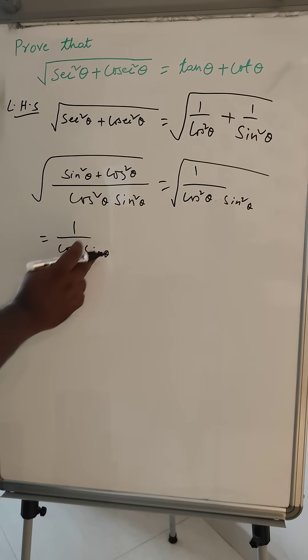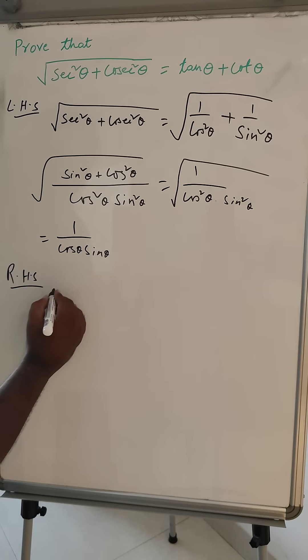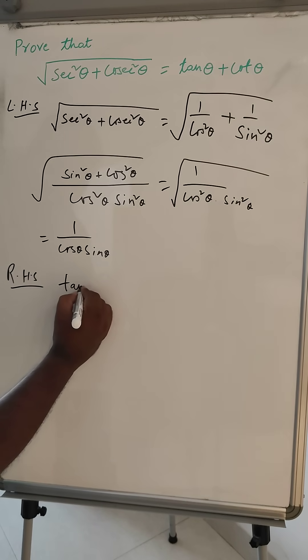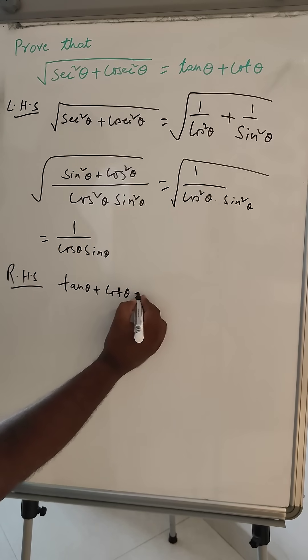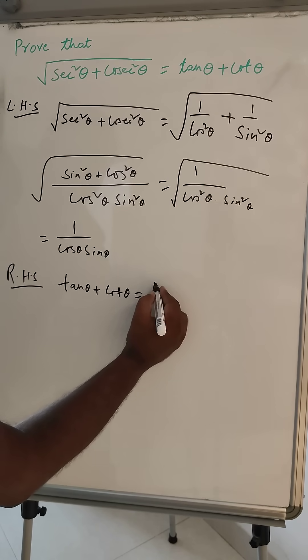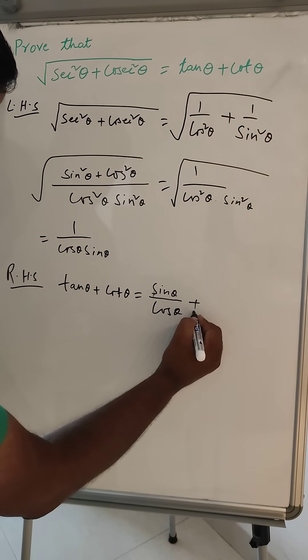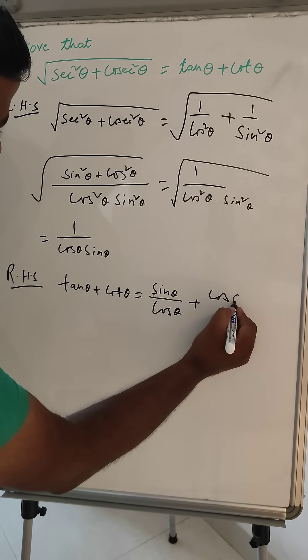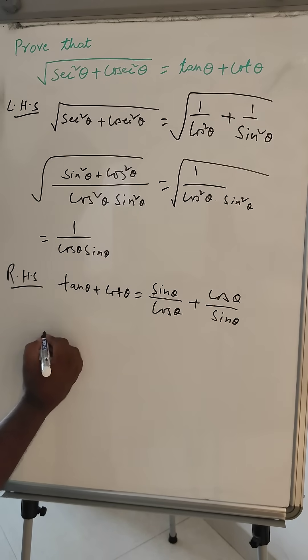So from LHS we got this, from RHS we will do RHS tan theta plus cot theta. We can write tan theta is sin theta by cos theta and cot theta is cos theta by sin theta.